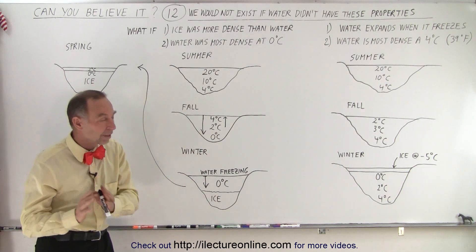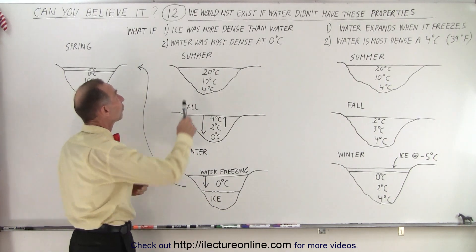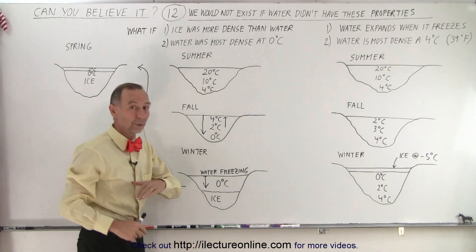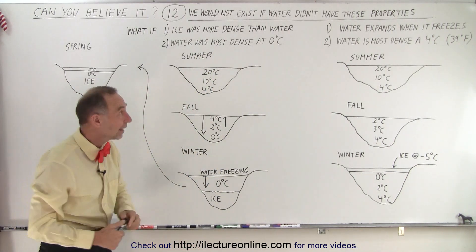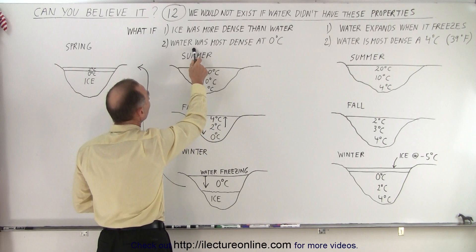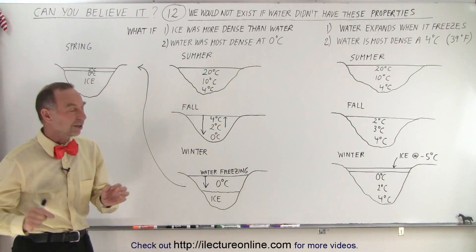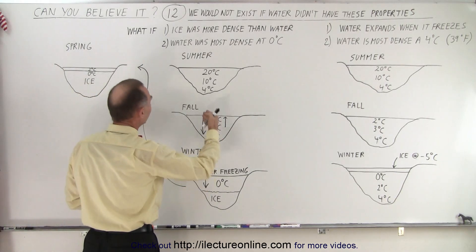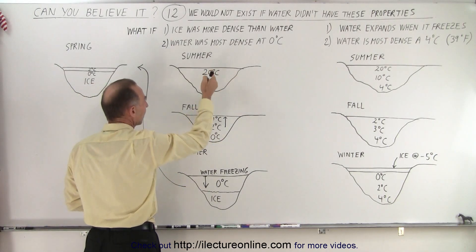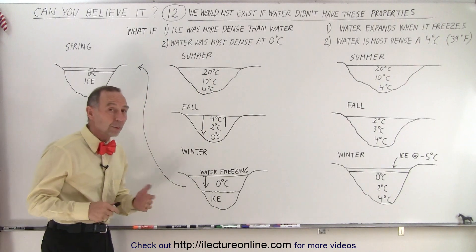But what if those two properties did not exist? What if ice was more dense than water? So when water turns to ice, it would sink. And secondly, what if water was most dense at zero degrees centigrade, not at four degrees centigrade? Same scenario, same lake in the summertime. The warmer water would be at the top. The colder water would be at the bottom, as we would expect.